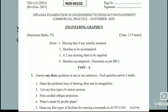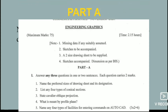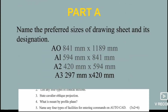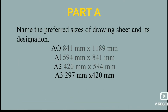In Part A, there are one or two mark questions. The first question asks you to name the preferred sizes of drawing sheet and its designation. The second question is about the four dimensions, carrying two marks. I will talk about the sizes of the repeated sizes.